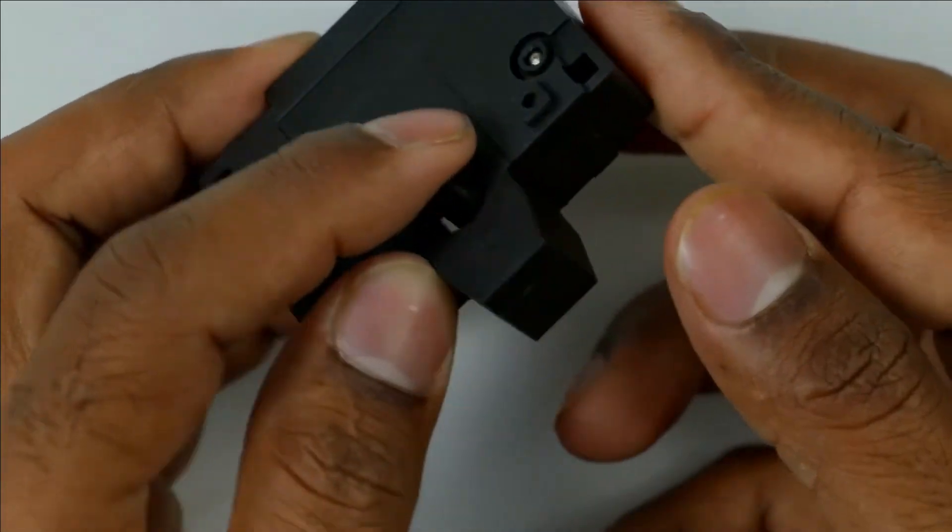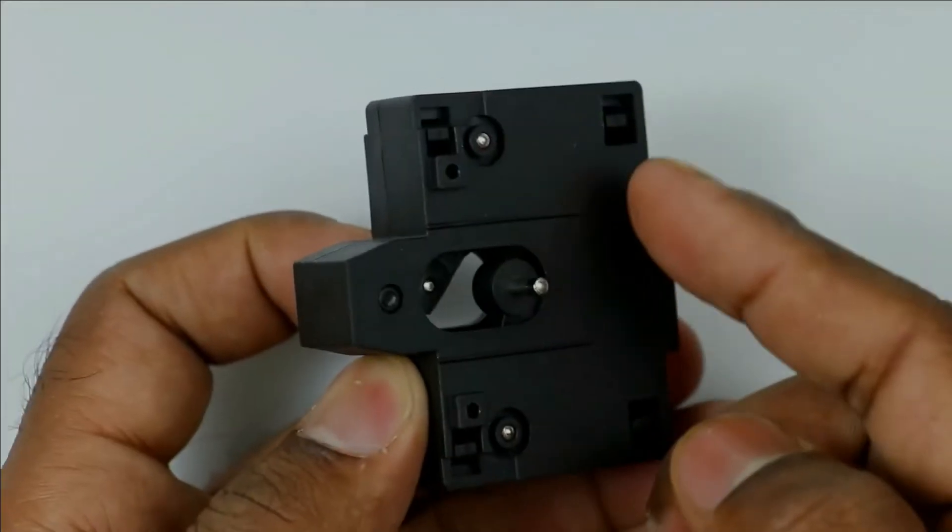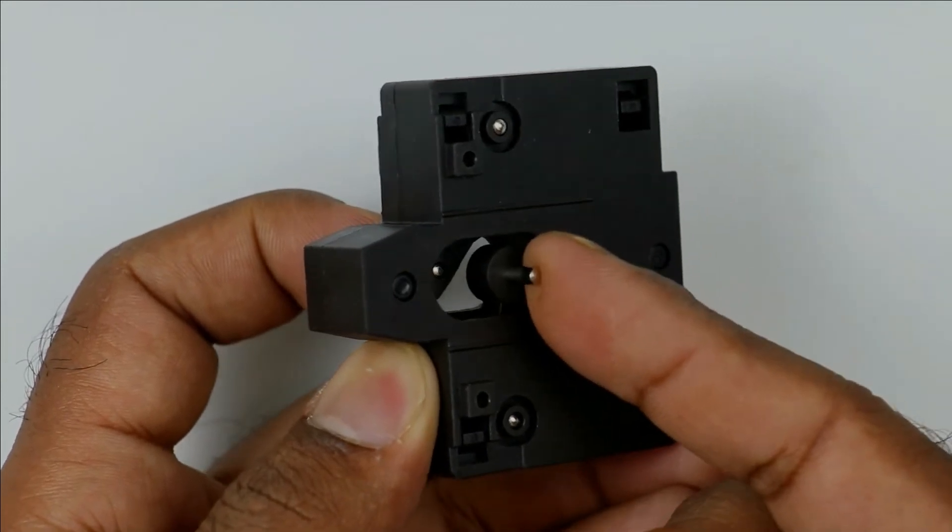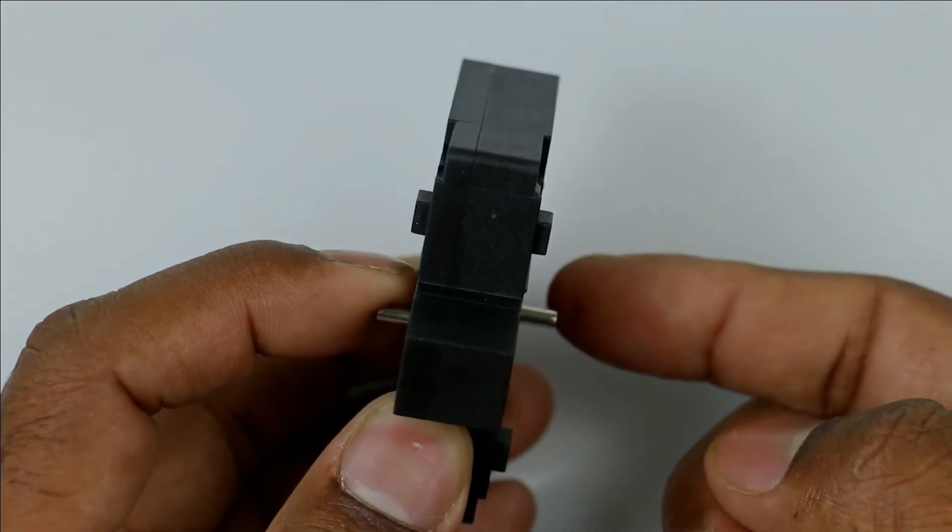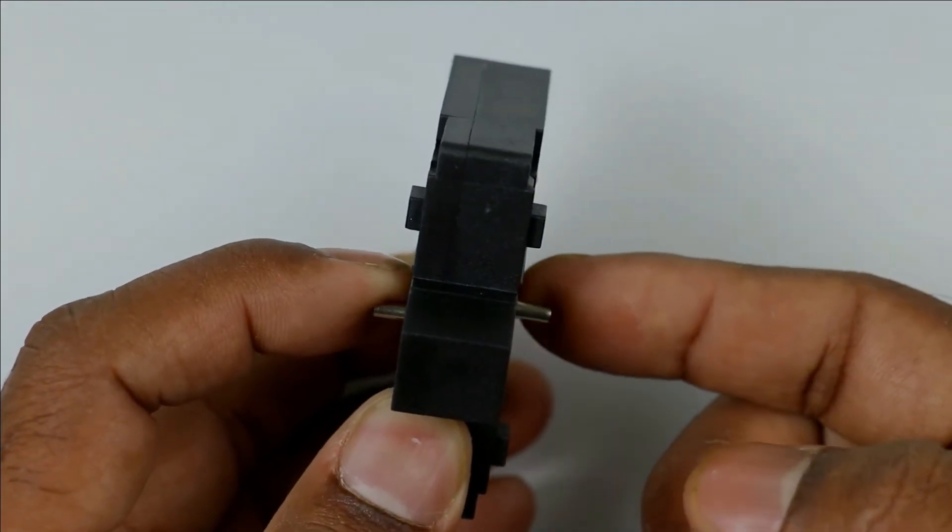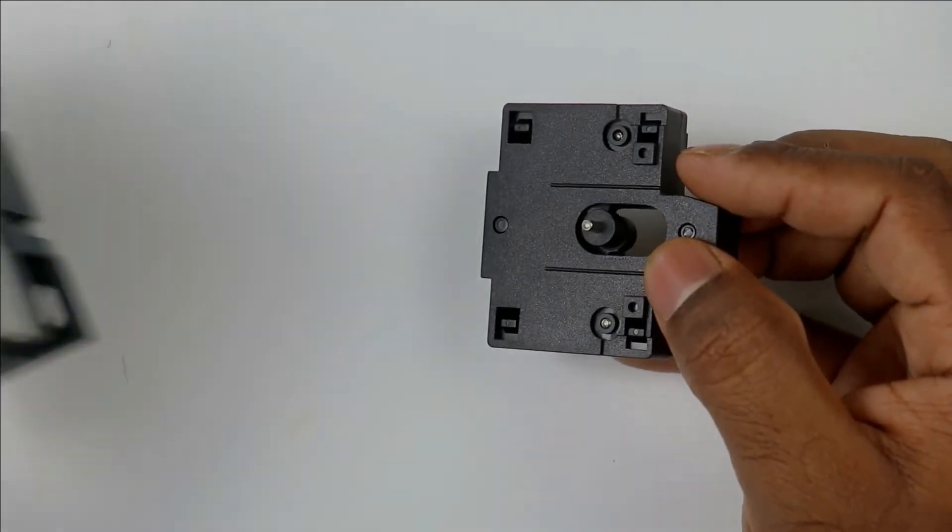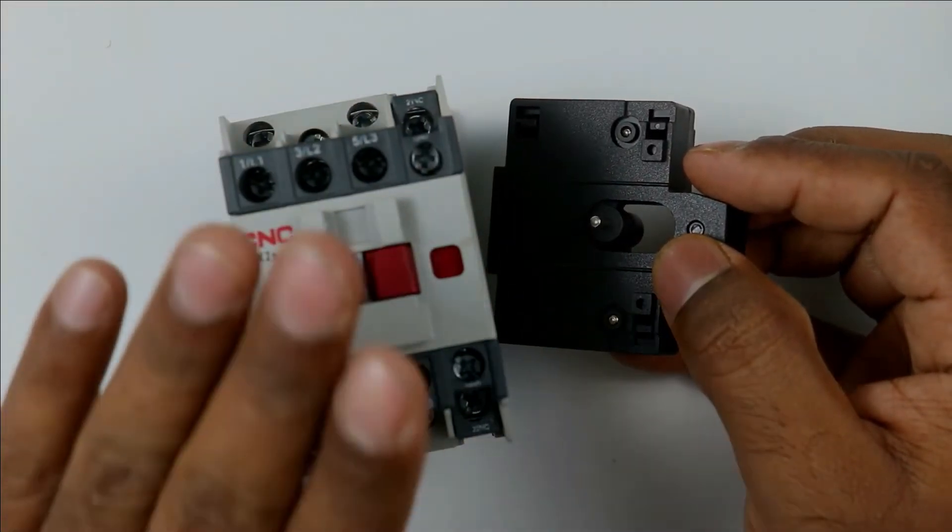Similarly if I pull this lever upwards and try to pull this one, then it won't make full contact. Overall we can say only one at a time can be pulled upwards. Now how this can be mounted with contactor, let's understand.